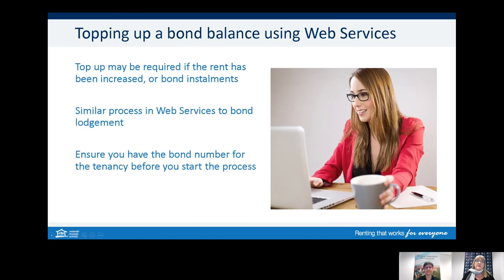At times during the tenancy, if there is a rent increase, you may need to top up the bond. For agents and landlords, it must be at least 11 months since the last bond increase or the start of the tenancy. A bond top-up can also occur if a tenant is paying off their bond in instalments — each instalment needs to be lodged with the RTA within the 10-day time frame. There is a slight exception for instalments for rooming accommodation, outlined in the Act under Section 118. You can use web services or the paper form to top up.